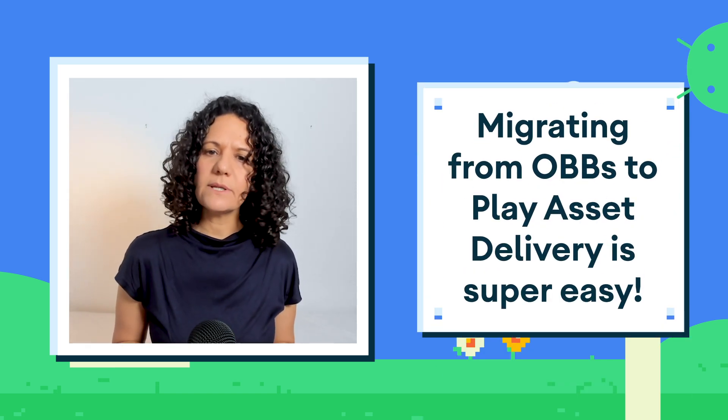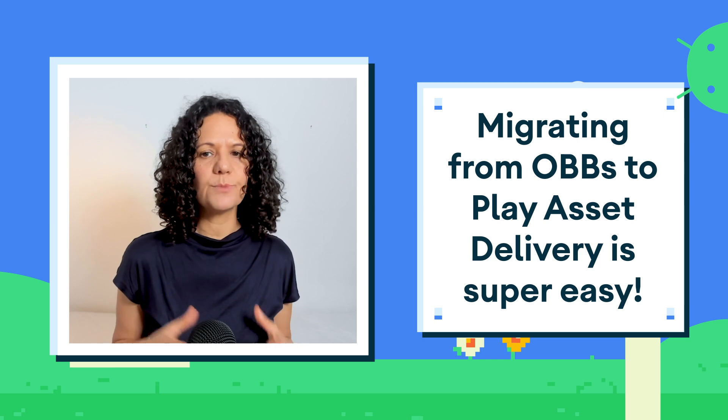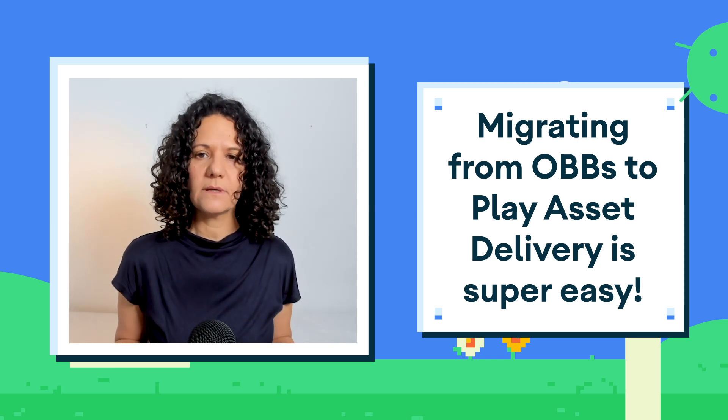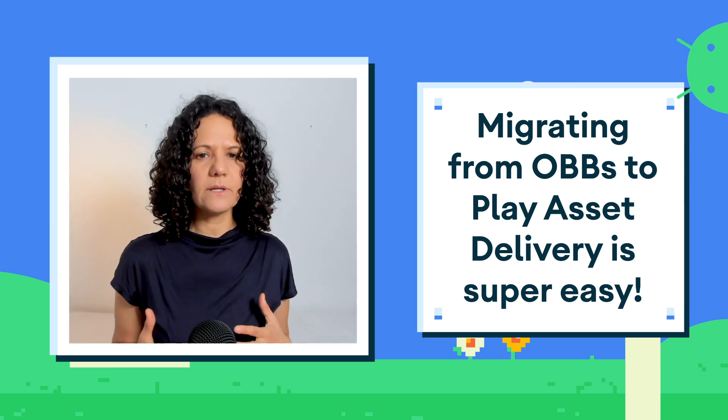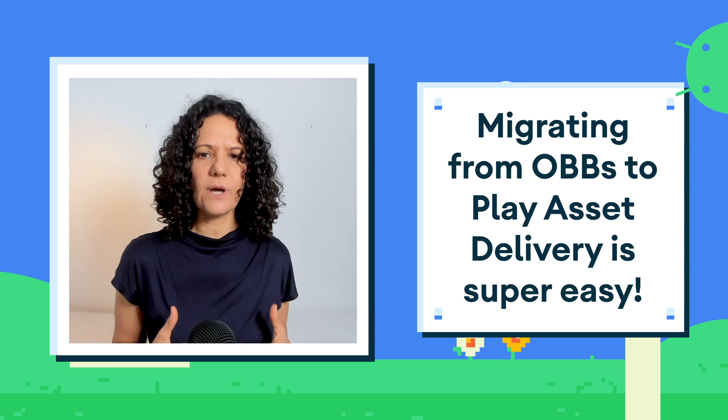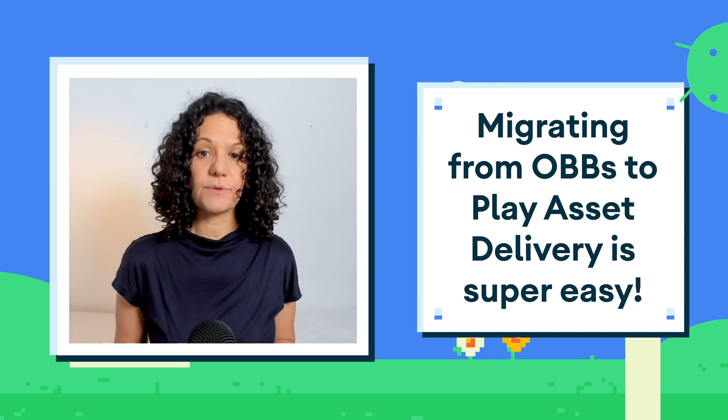Either way, migrating from OBBs to Play Asset Delivery is super easy. All you need to do is rebuild and repackage your app according to the Play Asset Delivery format, which expands the Android app bundle. We have built a set of integration tools that takes care of all the heavy lifting, so that you don't need to spend your time diving into the integration details, and it can be as simple as choosing a new build target.